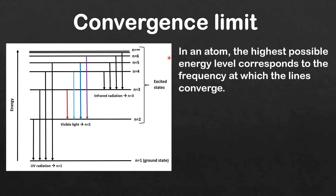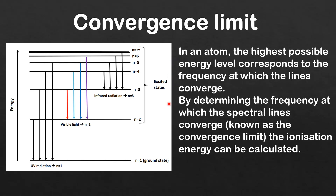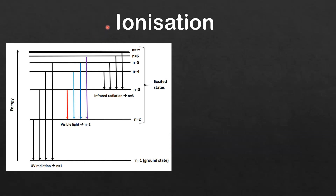In an atom, the highest possible energy level corresponds to the frequency at which the lines converge. By determining the frequency at which the spectral lines converge — known as the convergence limit — the ionization energy can be calculated.